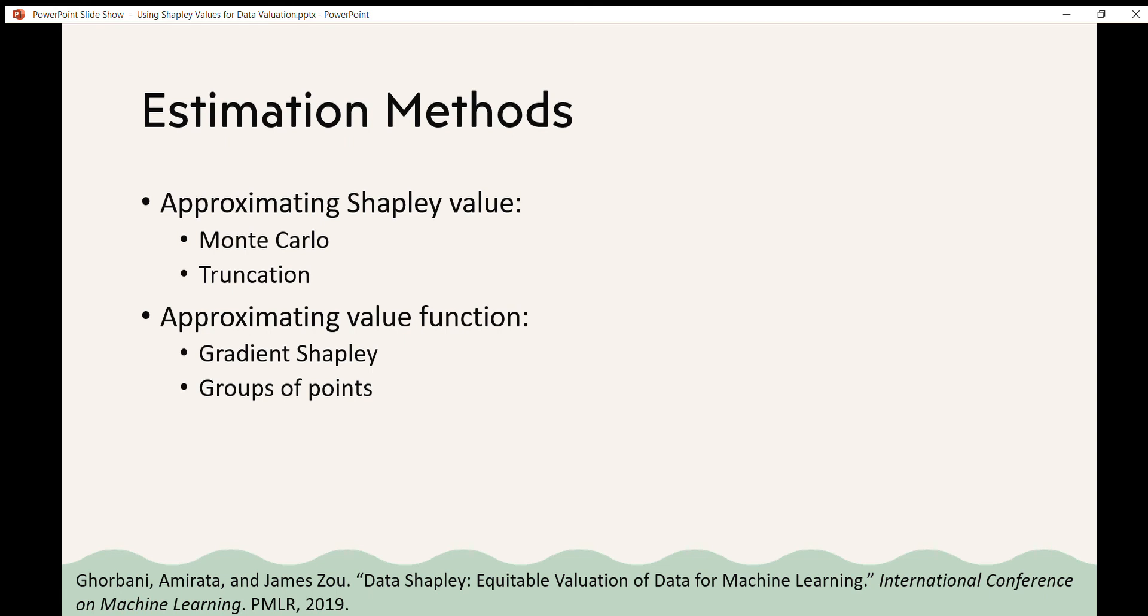You can also approximate the value function. So with many machine learning methods, training over a dataset can take a really long time. So the authors present two different options for approximating the value function. The first is gradient Shapley and applies when the learning method uses stochastic gradient descent. Rather than training to convergence, you can train for a single epoch and do a single gradient update and use that as the value function. Another option is to evaluate groups of points at once rather than evaluating a single point at a time.